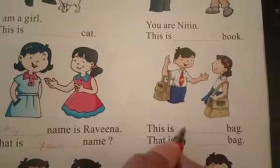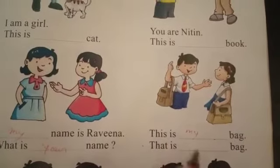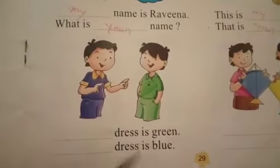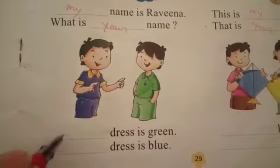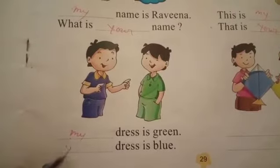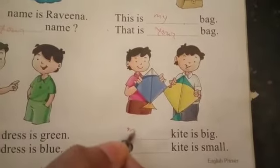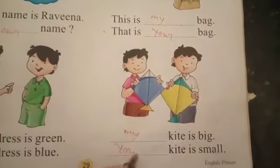What is your name? — यहाँ 'your' आएगा और यहाँ पर 'my' आएगा। This is my bag. That is your bag. My dress is green. Your dress is blue. My cat is big. Your cat is small.